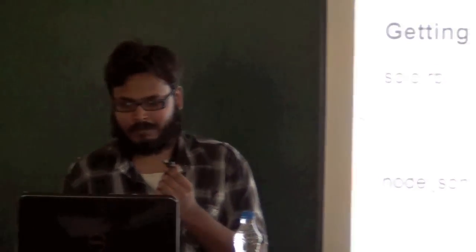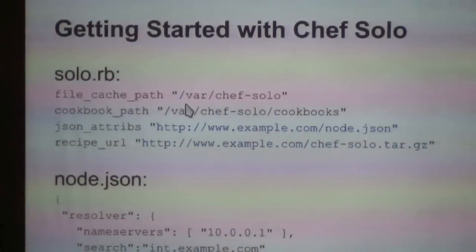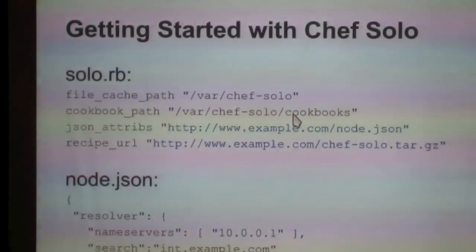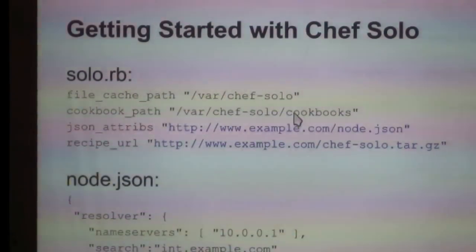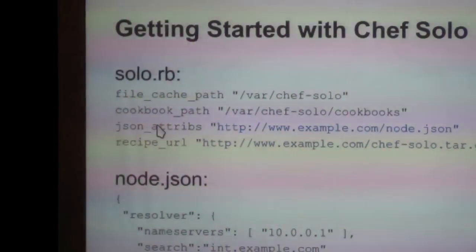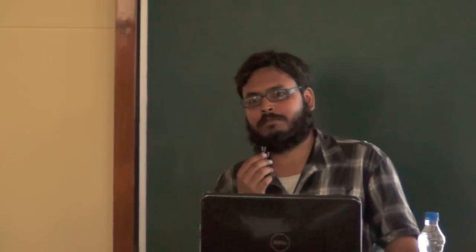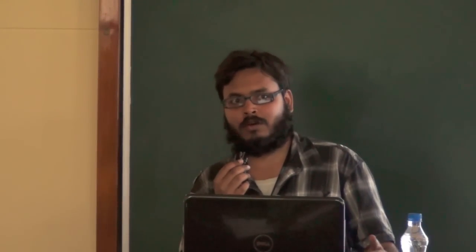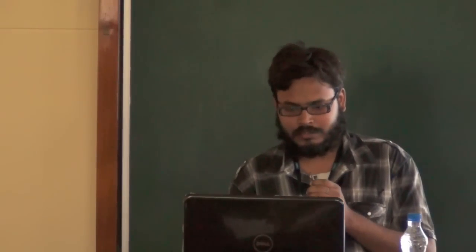The anatomy of the solo.rb file: you mention your file cache path, generally set to /var/chef/cache. You have your cookbook path — cookbooks are placed inside the cache directory, so cookbooks are under /var/chef/solo. JSON attributes contain in JSON format what packages are to be installed. It's good practice to deploy your recipes to Amazon S3 or GitHub, so instead of maintaining everything locally you package them and pull from there. An example node.json file tells the name server, and the run list — for instance containing only Nginx — will install Nginx.